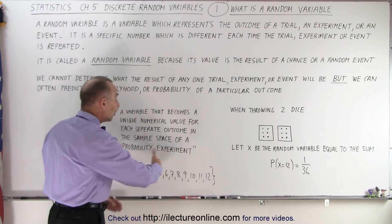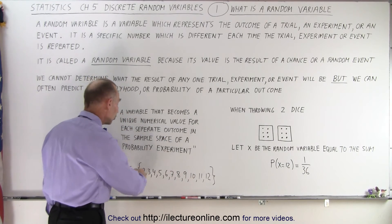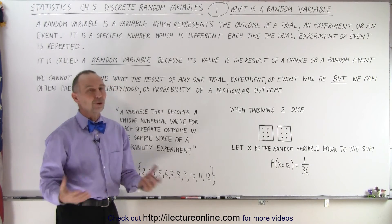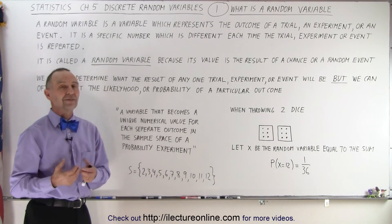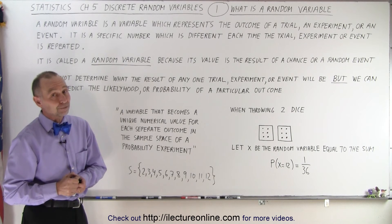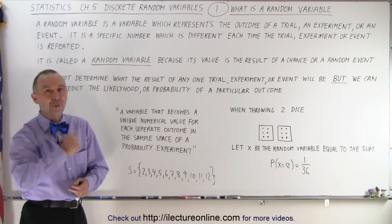That's your sample space. You know that each time you throw two dice you'll get one of these numbers, but you don't know which one. Each time you throw two dice it could be any one of them. That's what makes that variable random, and that's what we call a random variable.